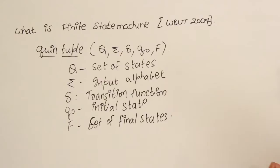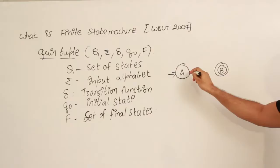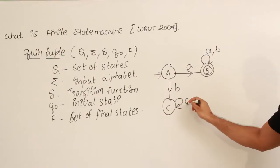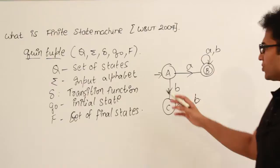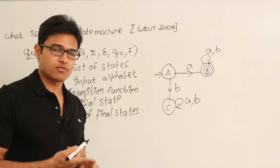I'll take an example and show you. Let's say we have these states — like this and like this. So in the exam, first write that a finite automata or finite state machine is a quintuple, meaning a tuple containing 5 elements.